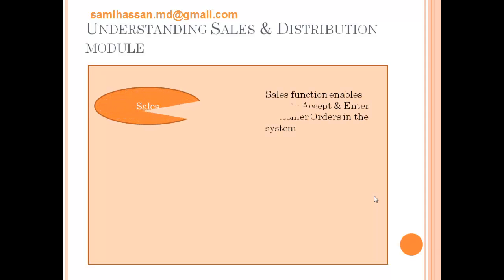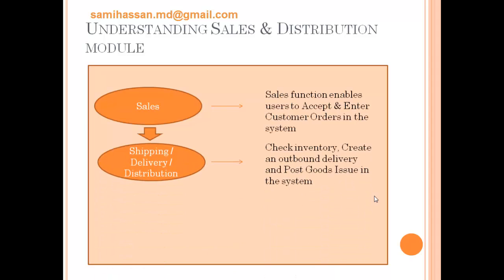The sales function enables users to accept and enter customer orders in the system. What comes after sales? Shipping, of course — check the inventory, create an outbound delivery, and post the goods issue in the system. That is, you have received an order and you are ready to ship it; you check whether you have it in inventory and create delivery information, like the address of the customer.